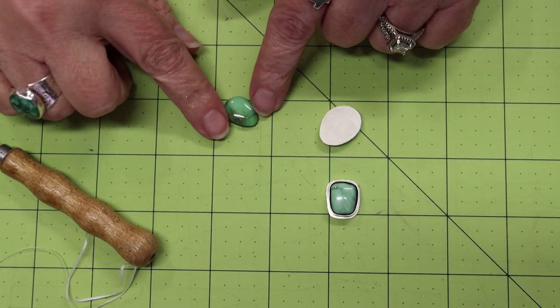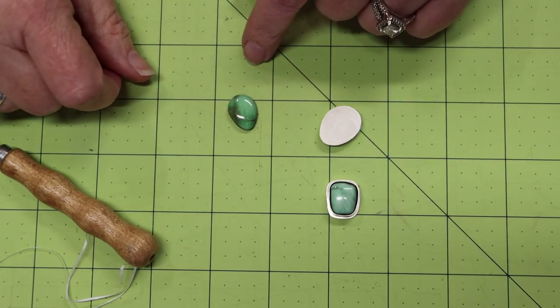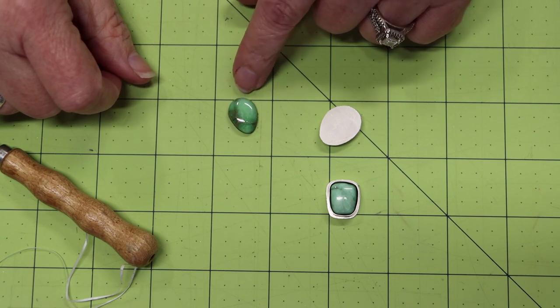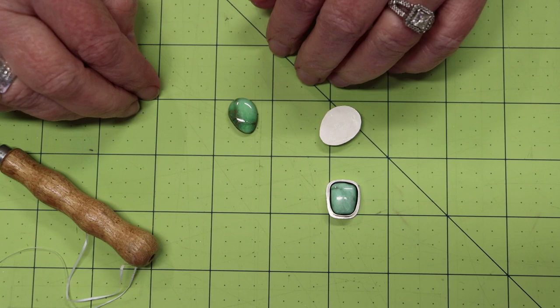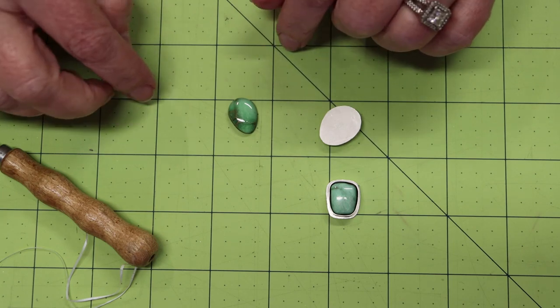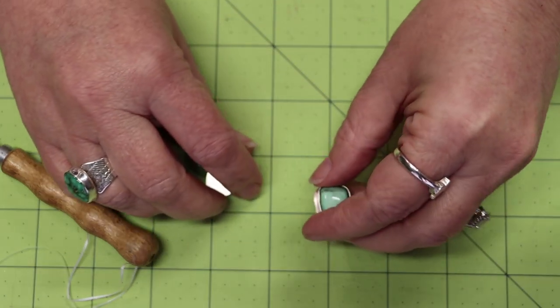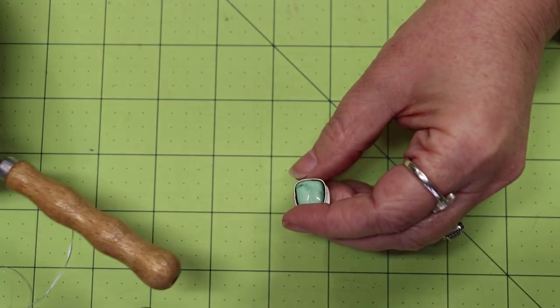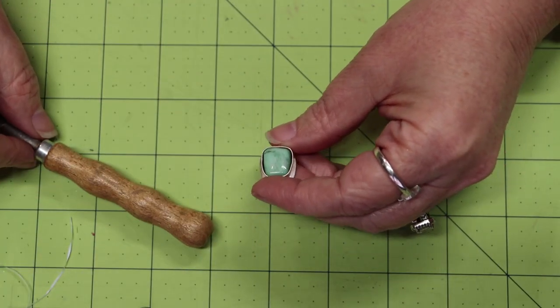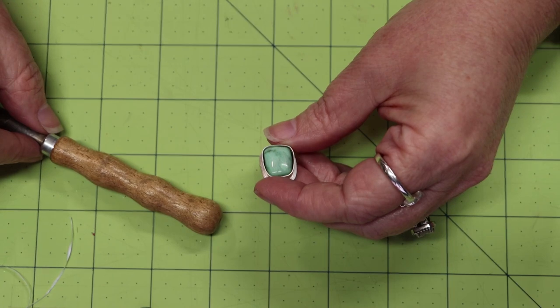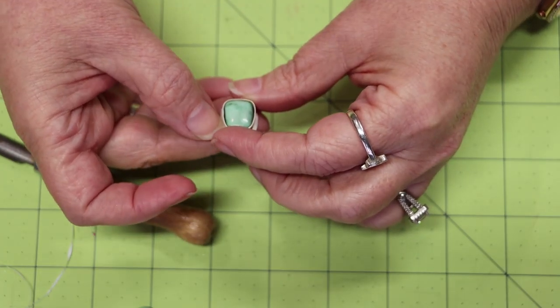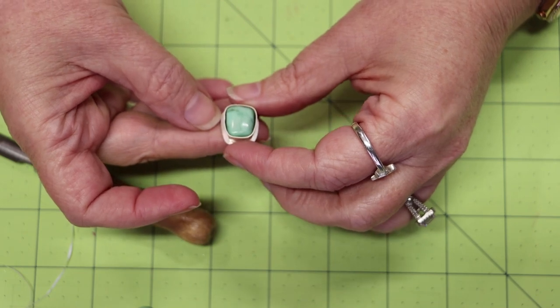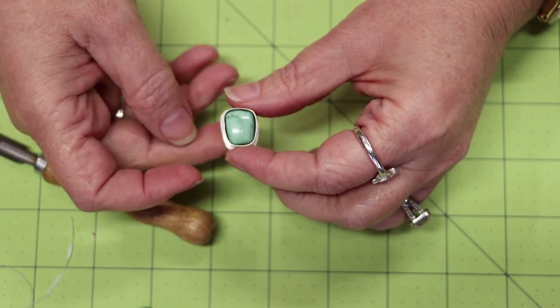Sometimes you have to really tap on the back of that for what seems like forever. Just keep tapping and eventually it should work its way out. If it's super tight and you've tapped on the back of it and it's just not budging, then the last thing that I would try is to drill a small hole in the back plate.